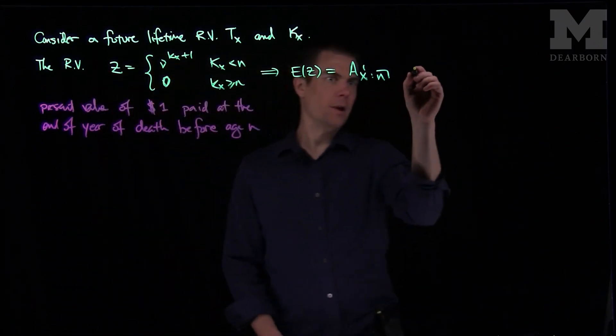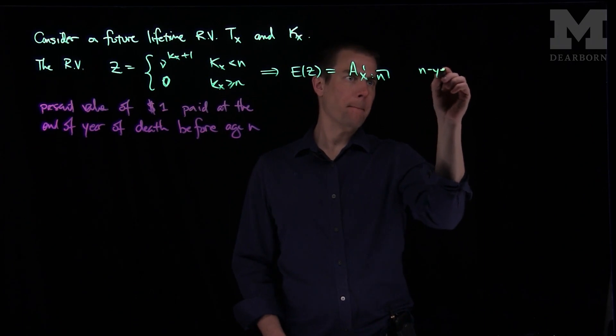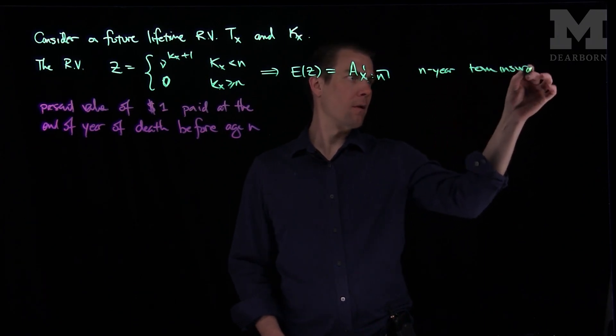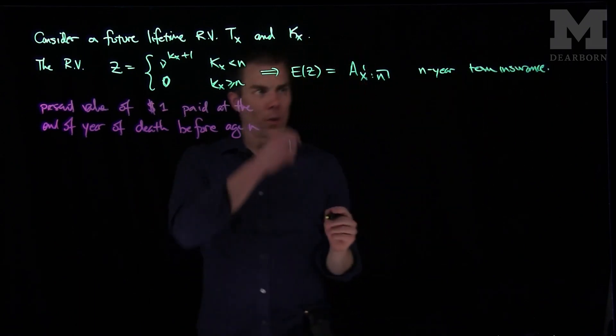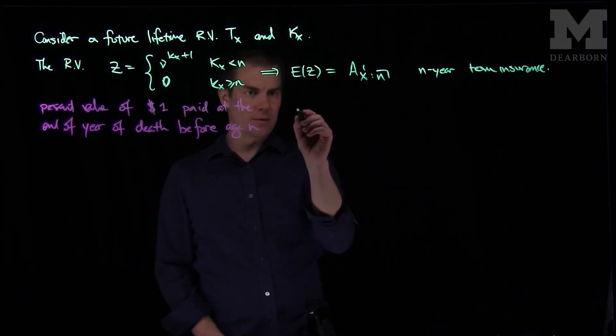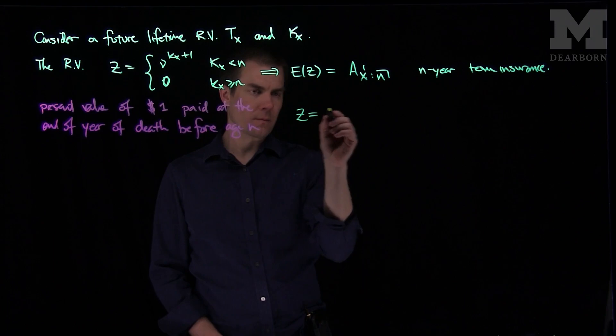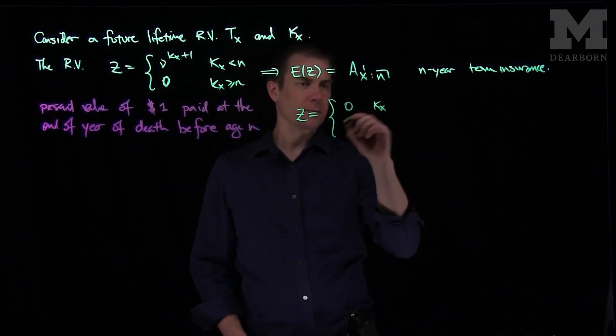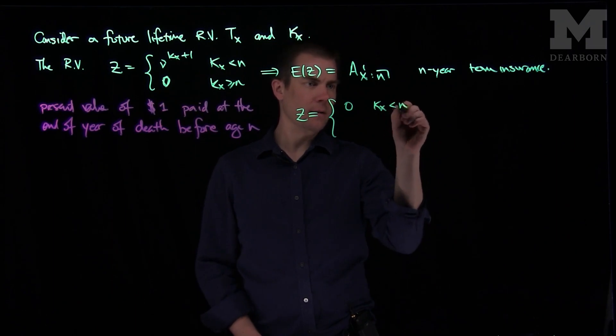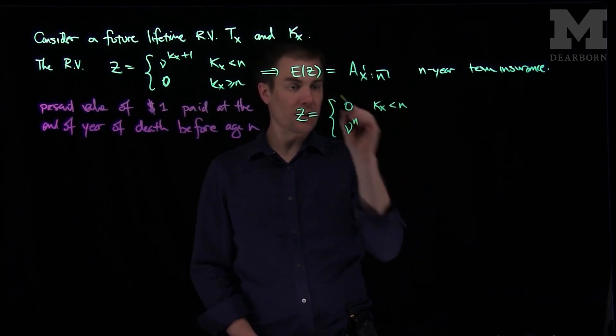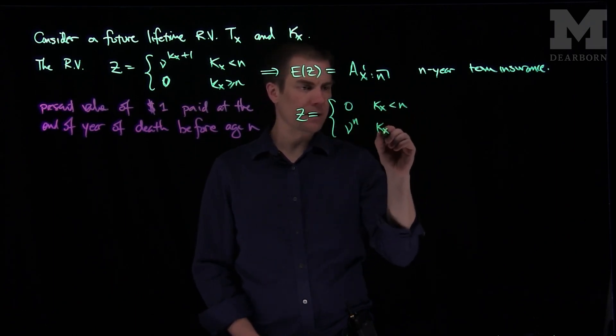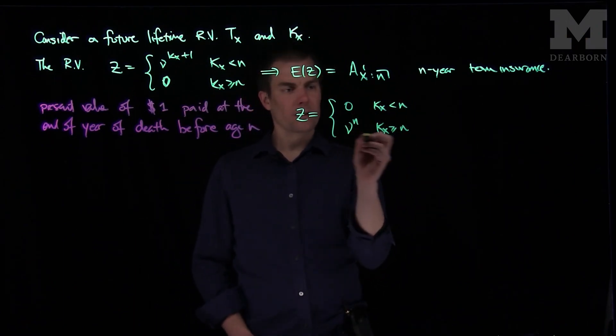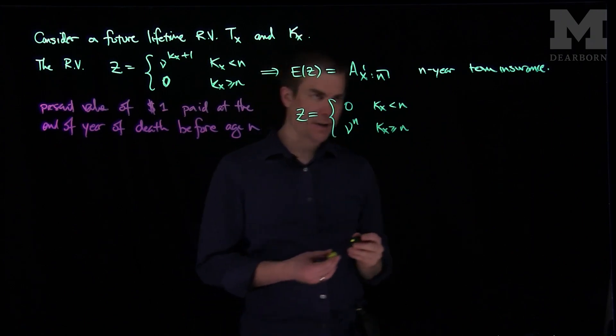So here's n-year term insurance. And what we can do is we can consider this random variable z, which is 0 if kx is less than n, and ν to the n if kx is greater than or equal to n. So this will pay one dollar if the lifetime survives to age n.